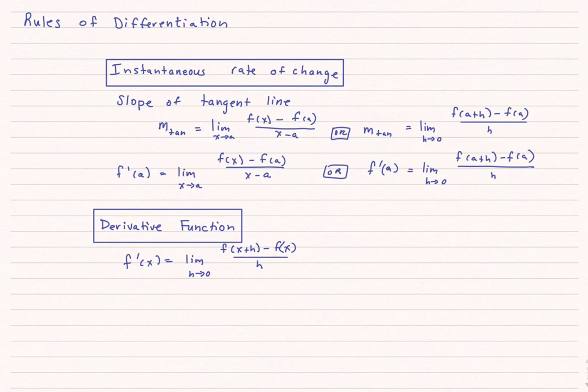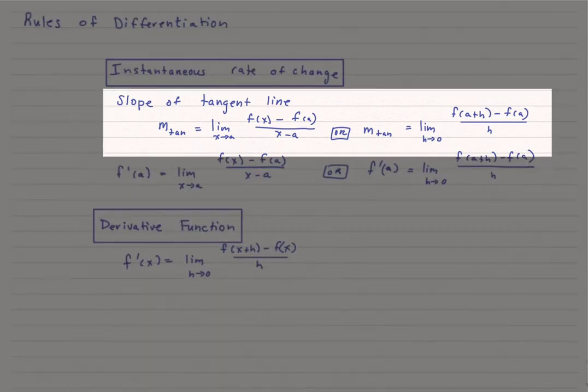When we talked about derivatives so far, we've talked about them in a very formal and time-consuming way. For instance, the instantaneous rate of change — we can think of the slope of the tangent line. One way to write that is the slope of the tangent line equals the limit as x approaches a of f(x) minus f(a) divided by x minus a. Or we could write it as the limit as h approaches zero of f(a+h) minus f(a) all divided by h.